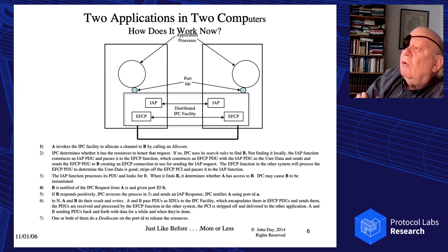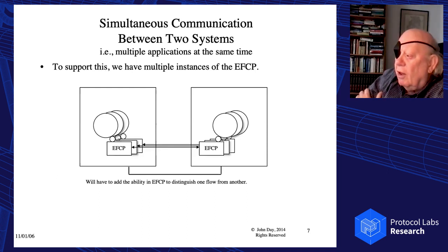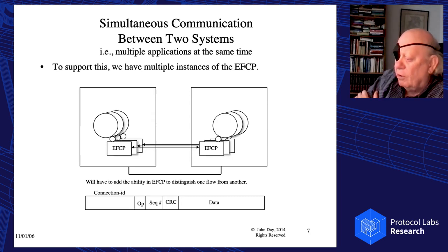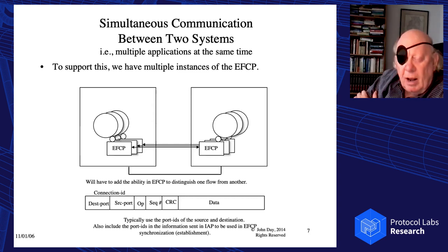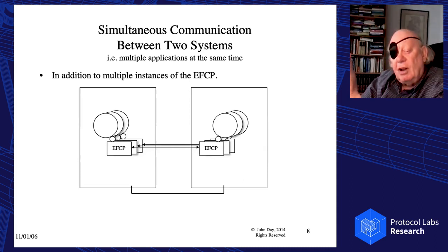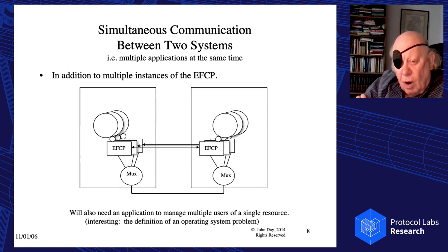Then I went to more than two applications in two computers. We have to be able to distinguish messages for one flow to one application from the others — so we really need a connection. Over time people said, well, we've got these port IDs acting like file descriptors, why don't we just use those and concatenate them to make the connection ID? But now we have another problem: multiple users of a single resource. That's the definition of an operating system. So we're going to need basically an application that manages the use of the wire.